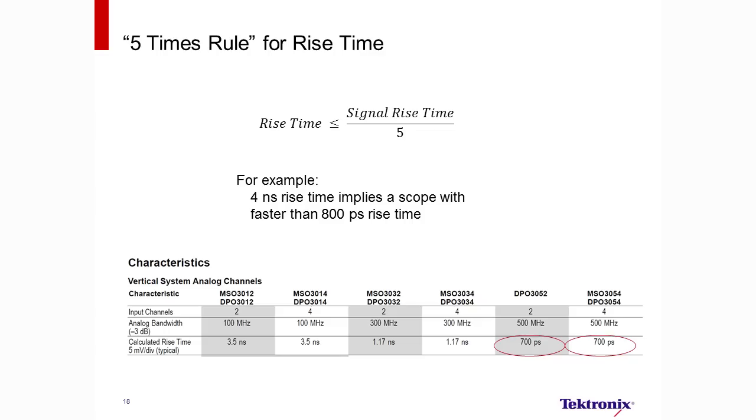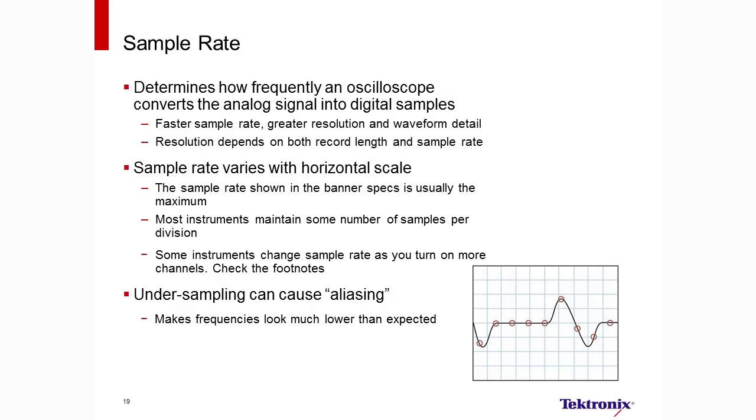So higher bandwidth scopes will be able to accurately display faster rise times. Just as with bandwidth, we have to account for the roll-off characteristics. Again, we use a rule of five, as shown on this slide. As an example, to look at a 4 nanosecond rise time, we would need a scope with a rise time five times faster than 4 nanoseconds, or 800 picoseconds or less. I've shown where you can find this on a typical scope datasheet.